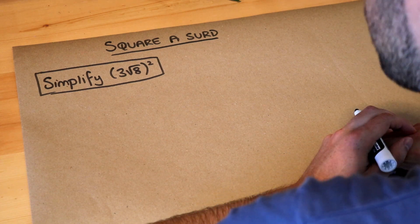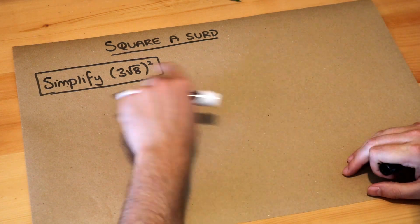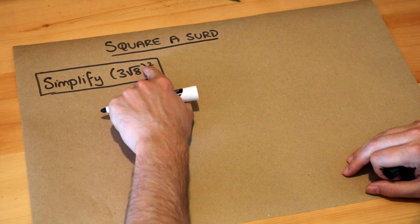Hello and welcome to Dr Ross's video on squaring a surd. So we want to simplify 3 root 8 all squared.